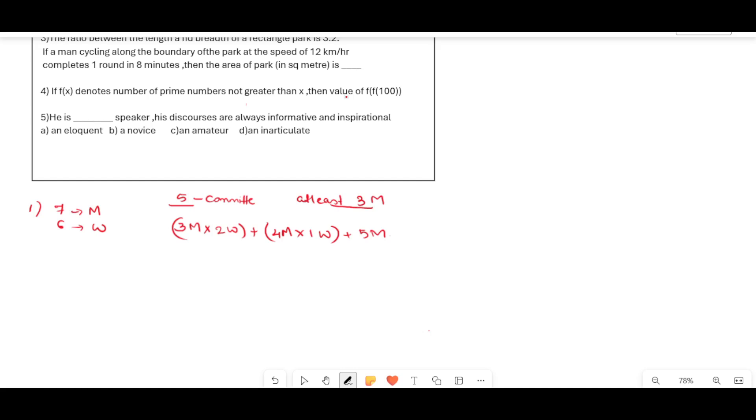So we can write as 3 men out of 7, that is 7C3, into 2 women out of 6, 6C2, plus next is 7C4 into 1 out of 6, that is 6C1, plus 5 men out of 7, that is 7C5. Now we have nCr is equal to n factorial by r factorial into n minus r factorial. Using this we can find the solution.